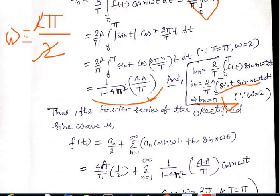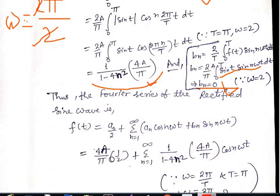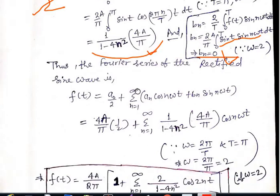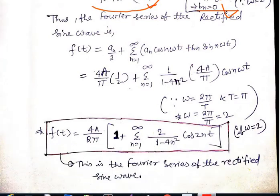So the Fourier series of the rectified sine wave is: f(t) = a₀/2 + sum from n=1 to infinity of [aₙcos(nω₀t) + bₙsin(nω₀t)]. After substituting the values of a₀, aₙ, and bₙ = 0, we get f(t) = (4A/2π)[1 + sum of the remaining terms]. This is the Fourier series of the rectified sine wave.